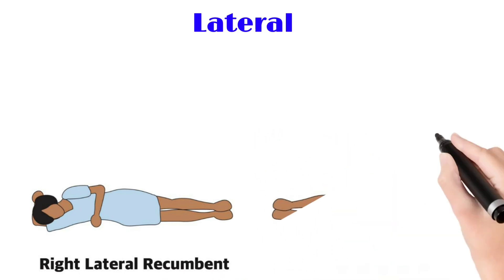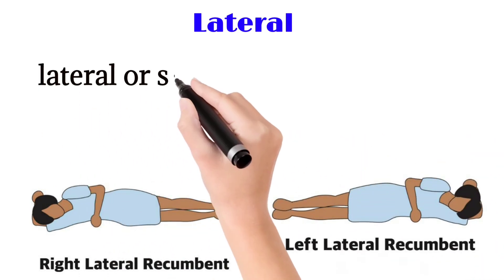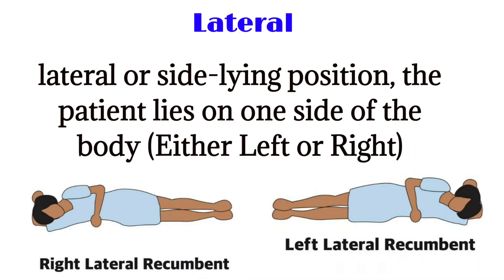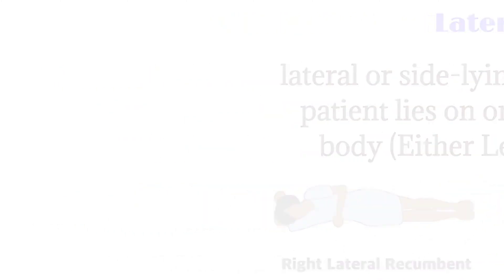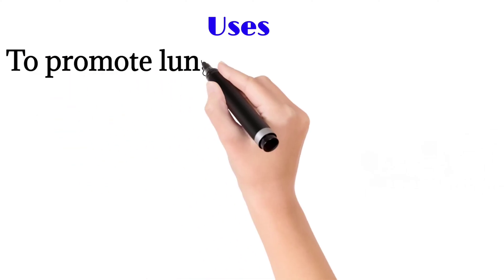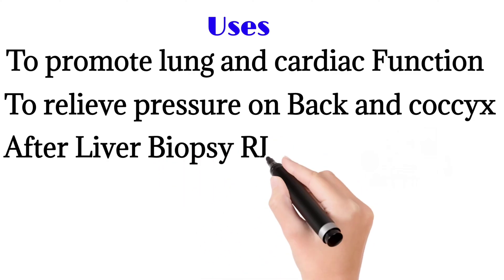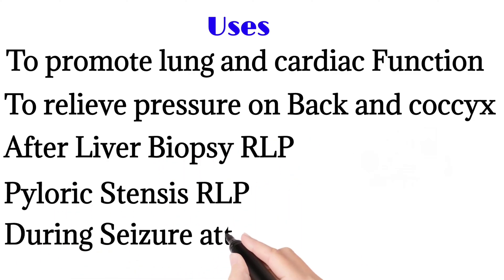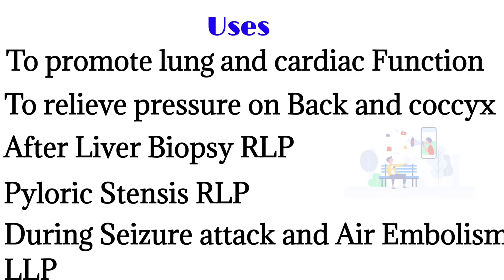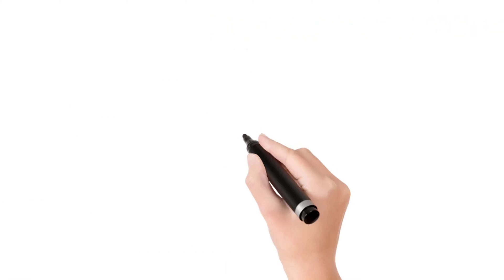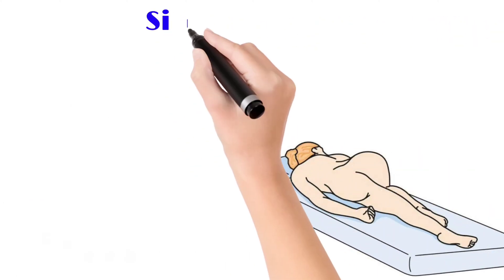Next is the lateral position. There are two types — right lateral and left lateral, also called side-lying position. The patient lies on one side of the body, either right or left. Uses include to promote lung and cardiac function, relieve pressure on back and coccyx, after liver biopsy (right lateral), pyloric stenosis (right lateral), and during seizure attack and air embolism (left lateral).